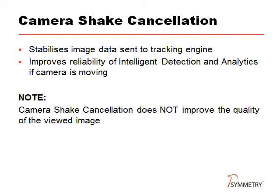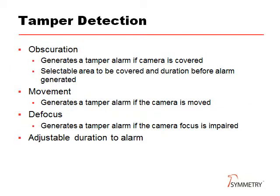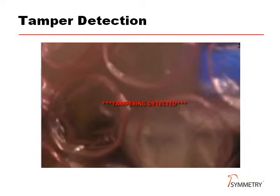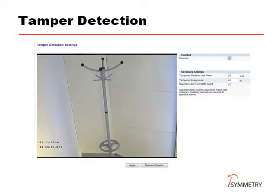It is important to note, however, that camera shake cancellation does not stabilize the viewed image. Tamper detection can generate alerts from a variety of conditions, such as the camera being covered, or moved, or if its focus is adjusted. Tamper is configurable, so an alert can be generated if, for example, a certain percentage of the image is covered for a predefined time. This screen shows the effect of placing bubble wrap over the camera — the message 'tampering detected' is displayed on screen, as well as the alert being sent to the video management software. With tamper enabled, we can define the tamper duration until alarm and tampered image area. In this case, a tamper alert will be generated if 40% of the image is covered for 20 seconds.